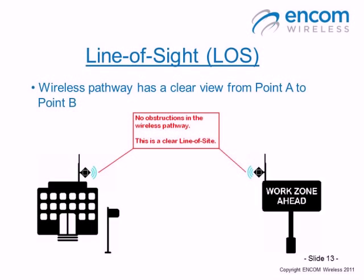Returning to our picture of a point-to-point system, you can see that there are no buildings, trees, or any sort of obstruction in the way between the master and remote radio. When we have no obstructions in the way, we call this a clear line of sight. It is always very important to have a clear line of sight for each wireless link in your system.